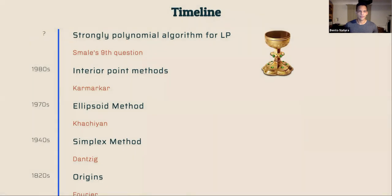This problem has been studied for a long time. The first fast algorithm was the simplex method by Dantzig in the 1940s. Since the late 70s and early 80s, with the ellipsoid method and interior point methods, we have weakly polynomial solvers. There remains the open question of whether there exists a strongly polynomial algorithm for linear programs.